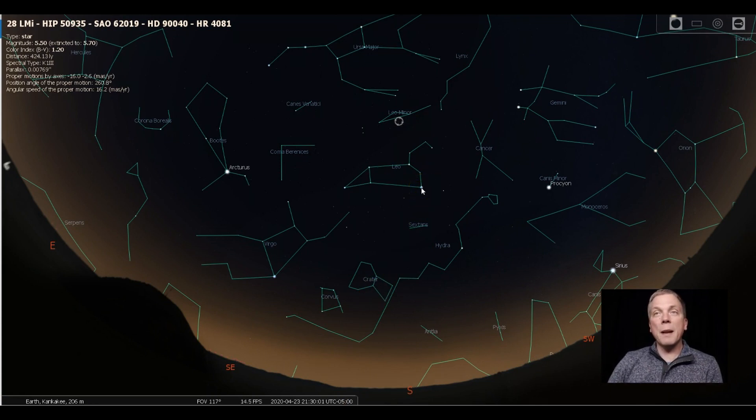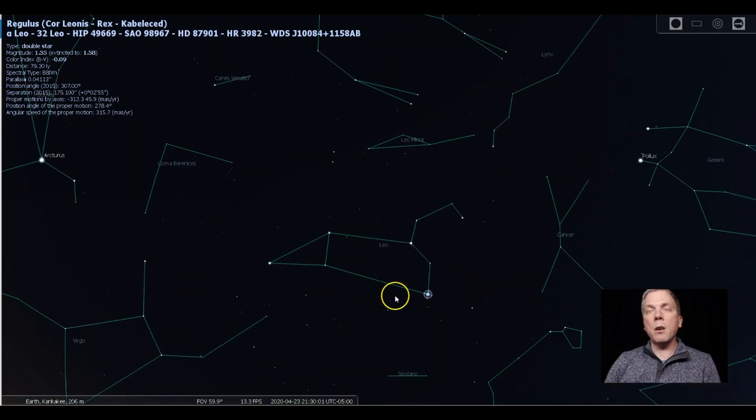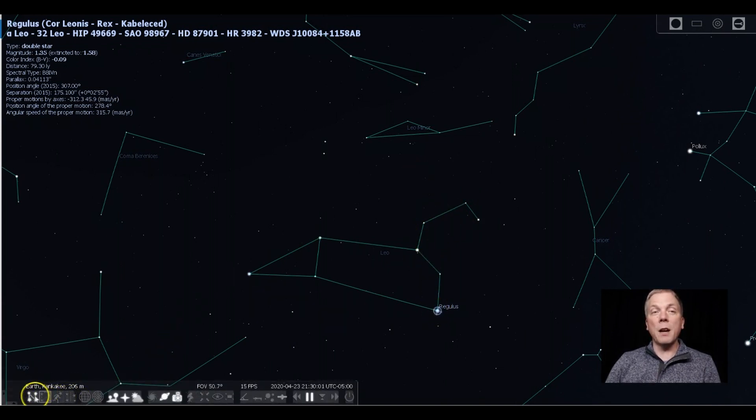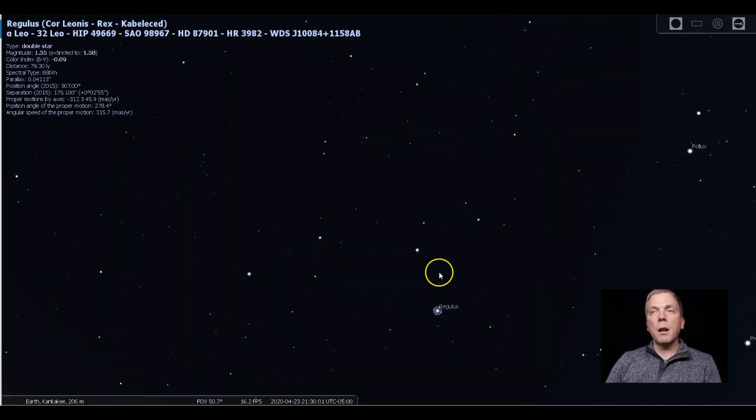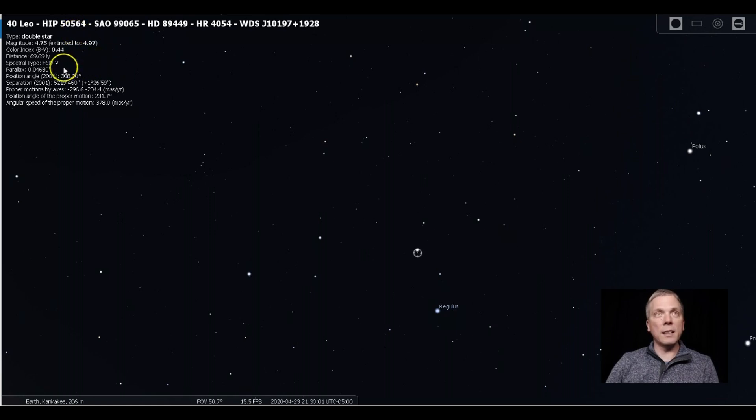We begin with the bright first magnitude star Regulus at kind of that elbow or maybe paw of Leo. And as we zoom in a little bit on there, we're going to see that there's some other bright stars that kind of form a backwards question mark shape. And we're going to use that to aim towards Leo Minor coming up. But beginning at Regulus, we want to jump just two stars. So from here to there, and then this one, which is Algeba. And that star is a K class star.